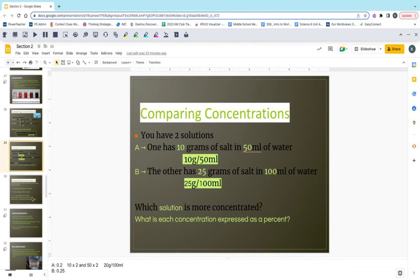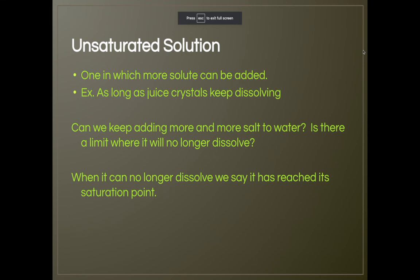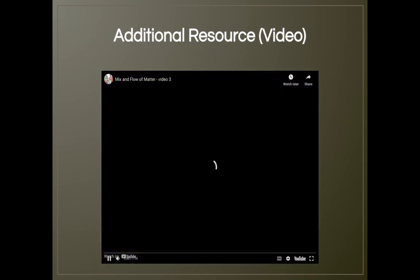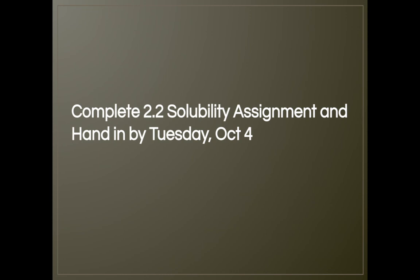For the last two slides, you need to define unsaturated and saturated solutions — refer to your textbook to answer those questions on the assignment. An unsaturated solution is one in which more solute can still be added; as long as juice crystals keep dissolving, it is unsaturated. There is a limit to how much salt will dissolve in water — eventually the salt just sits there, and it has reached the saturation point. A saturated solution is one in which no more solute will dissolve. A practical example is a paper towel wiping up a spill — there is a point when it can no longer absorb more moisture. Review textbook pages 24 to 28 to answer the questions on your 2.2 solubility assignment.